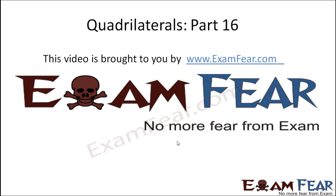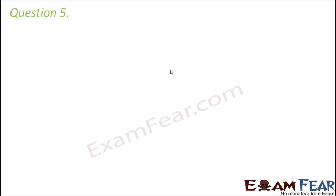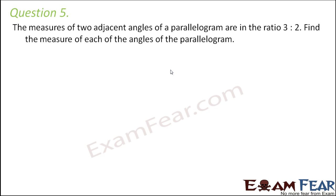Hello friends, this video on quadrilaterals part 16 is brought to you by examfear.com — no more fear from exam. Question number 5: the measures of two adjacent angles of a parallelogram are in the ratio 3 is to 2. Find the measure of each angle of the parallelogram.